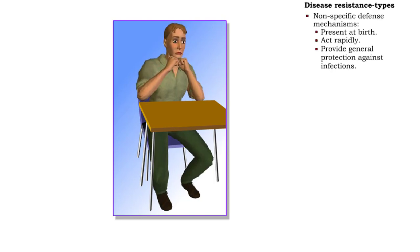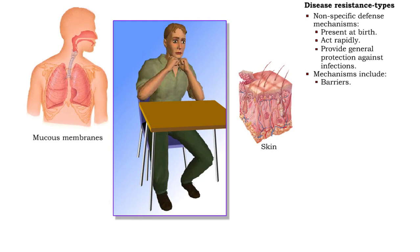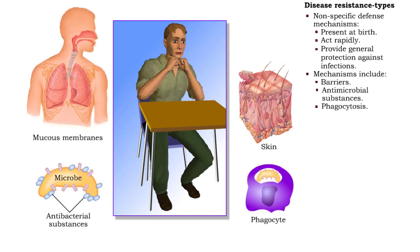Nonspecific resistance consists of defense mechanisms that are present at birth. They act rapidly but provide only general protection against infections. These mechanisms include barriers, antimicrobial substances, phagocytosis, inflammation, and fever.